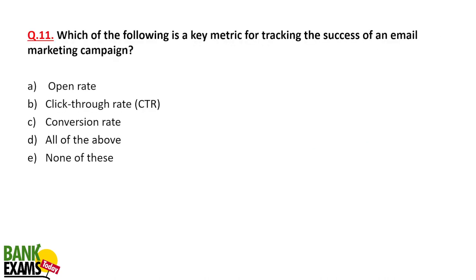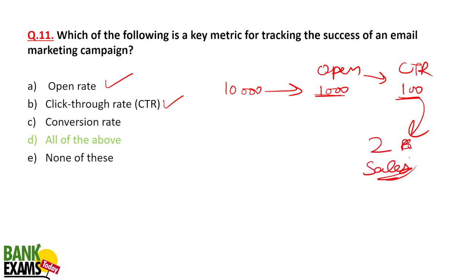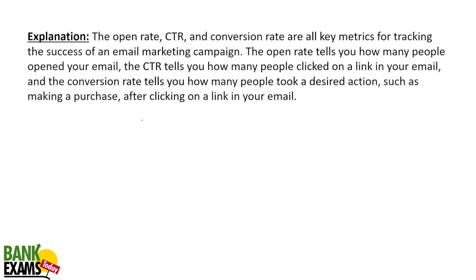Which of the following is the key metric for tracking the success of an email marketing campaign? Emails are tracked properly. If we send emails to 10,000 people, we know how many opened it — say 1,000 people — and how many actually clicked a link. So open rate is how many people opened it. CTR (click-through rate) is how many people clicked. Conversion rate is how many people actually purchased the goods or services. All of the above is the correct answer.